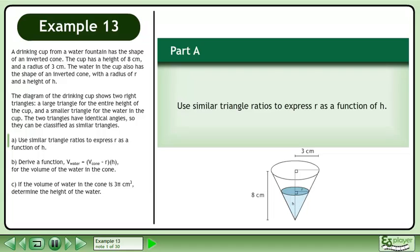A drinking cup from a water fountain has the shape of an inverted cone. The cup has a height of 8 cm and a radius of 3 cm. The water in the cup also has a shape of an inverted cone with a radius of r and a height of h.